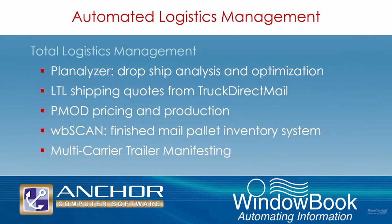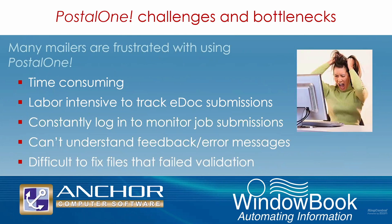A recent addition is called WBScan, a finished mail pallet inventory system. By scanning the Intelligent Mail barcodes on pallet placards, users can manage all of their finished mail pallets, including identification of physical locations in their mailing operations, right down to efficient loading of pallets onto trailers. With the multi-carrier trailer manifesting option, trailer manifests and bills of lading can be generated and data communicated directly to the logistics carrier — all directly from DatMail. By providing all of this functionality and connectivity into DatMail, this reduces many steps for mailers, reduces the number of systems needed, and reduces human error, which can be very costly.